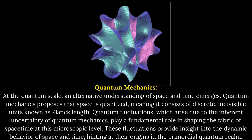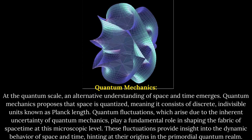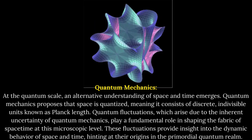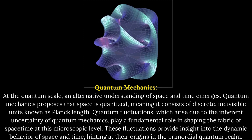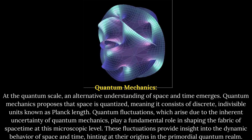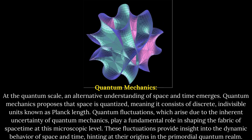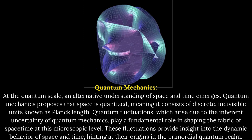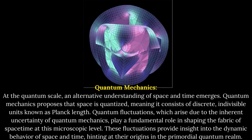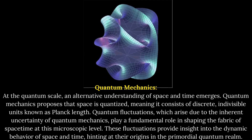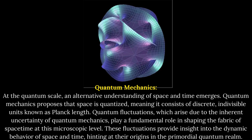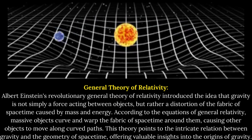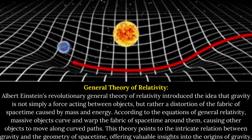Quantum Mechanics: At the quantum scale, an alternative understanding of space and time emerges. Quantum mechanics proposes that space is quantized, meaning it consists of discrete, indivisible units known as Planck length. Quantum fluctuations, which arise due to the inherent uncertainty of quantum mechanics, play a fundamental role in shaping the fabric of spacetime at this microscopic level. These fluctuations provide insight into the dynamic behavior of space and time, hinting at their origins in the primordial quantum realm.